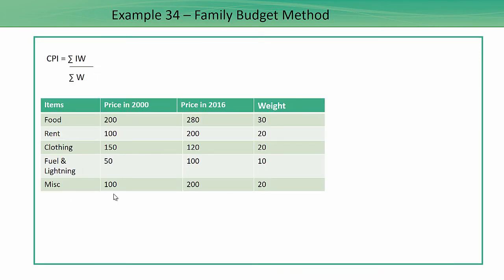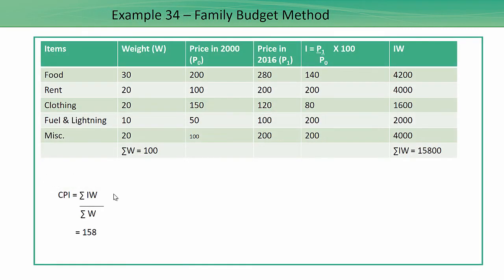Now based on this problem we'll calculate the CPI using family budget method. So the table will look like this. We would be having the price in the current year, we would have the price in the base year.